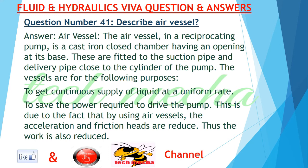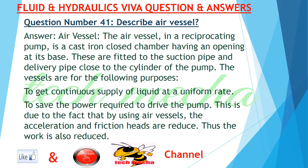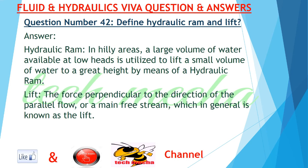Question number 41: Describe air vessel. Answer: Air vessel — in a reciprocating pump, the air vessel is a cast iron closed chamber having an opening at its base. These are fitted to the suction pipe and delivery pipe close to the cylinder of the pump. The vessels serve the following purposes: to get a continuous supply of liquid at a uniform rate, to save the power required to drive the pump — this is because by using air vessels, the acceleration and friction heads are reduced, thus the work is also reduced.